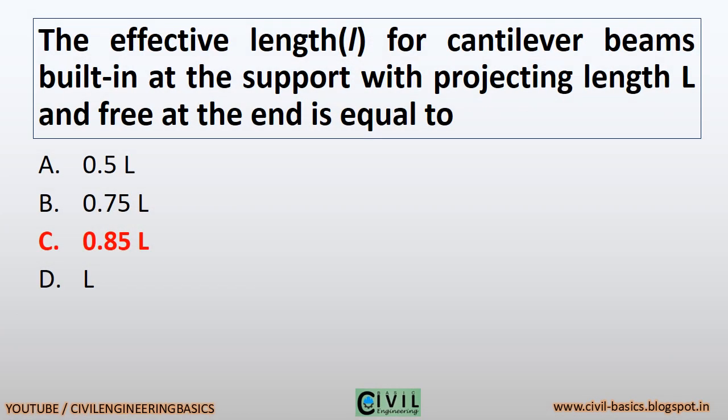The effective length L for cantilever beams built in at the support with projecting length L and free at the end is equal to 0.85 times its length.